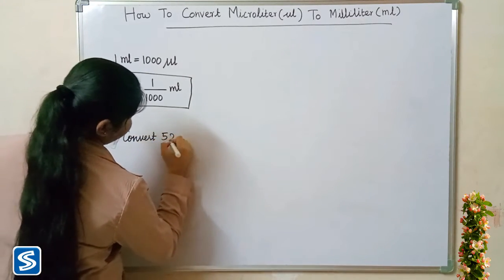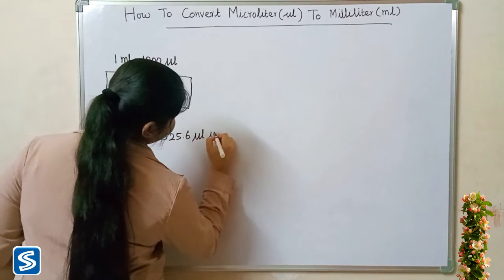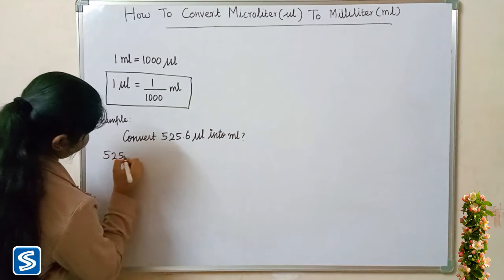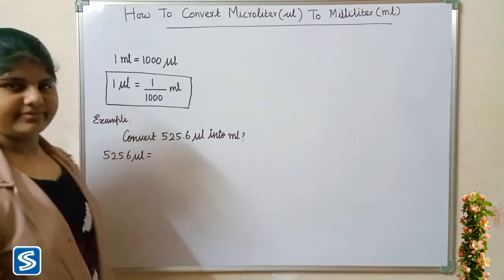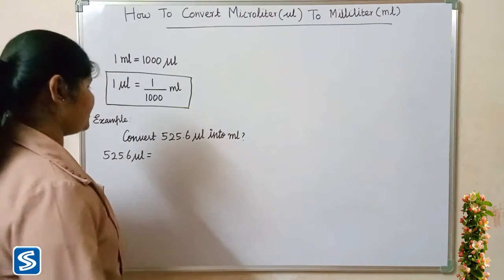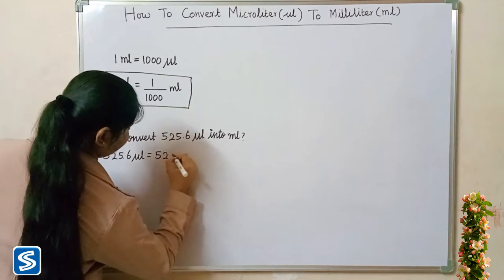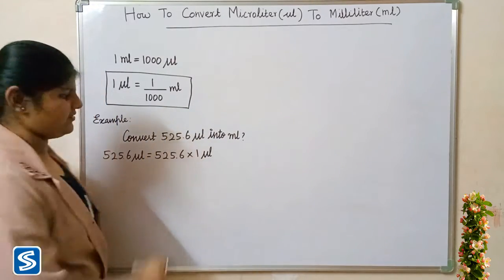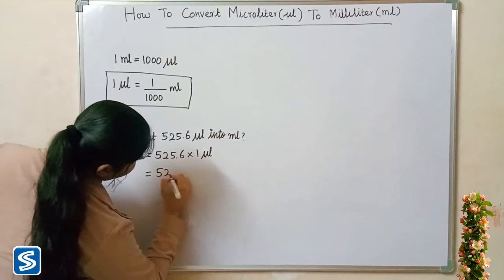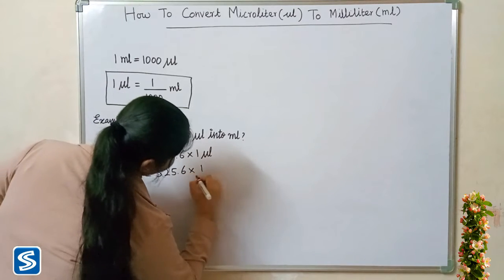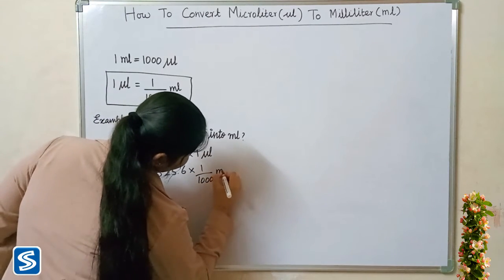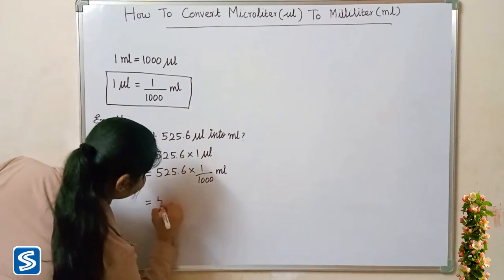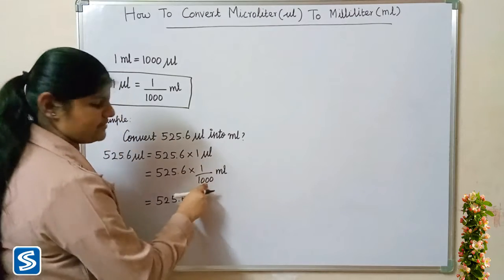Now we will take another example: convert five hundred and twenty five point six microlitres into millilitres. Five hundred and twenty five point six multiply one microlitre. Now we have to substitute one by thousand millilitres in the place of one microlitre, so five hundred and twenty five point six multiply one by thousand millilitres. Five hundred and twenty five point six multiply one will be five hundred and twenty five point six, so five hundred and twenty five point six divided by thousand millilitres.